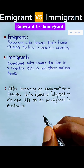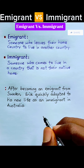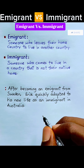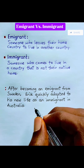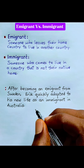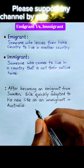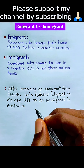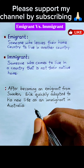In this sentence, Eric is Swedish and is about to leave Sweden for Australia. His fellow Swedes can call him an emigrant because he is about to leave Sweden. And by the time he arrives in Australia, the Australians can call him an immigrant because he has just arrived in Australia.